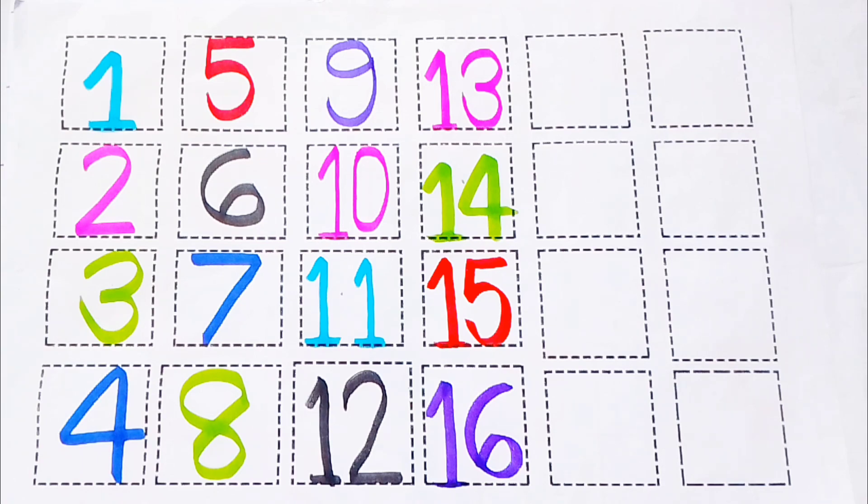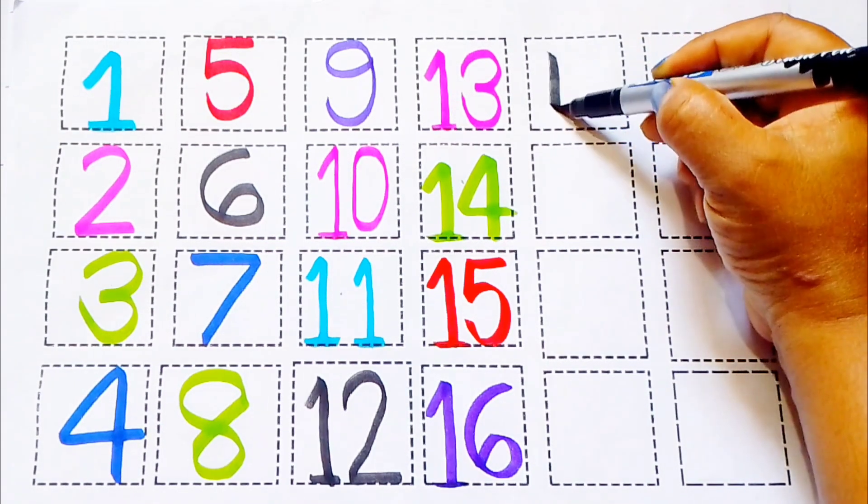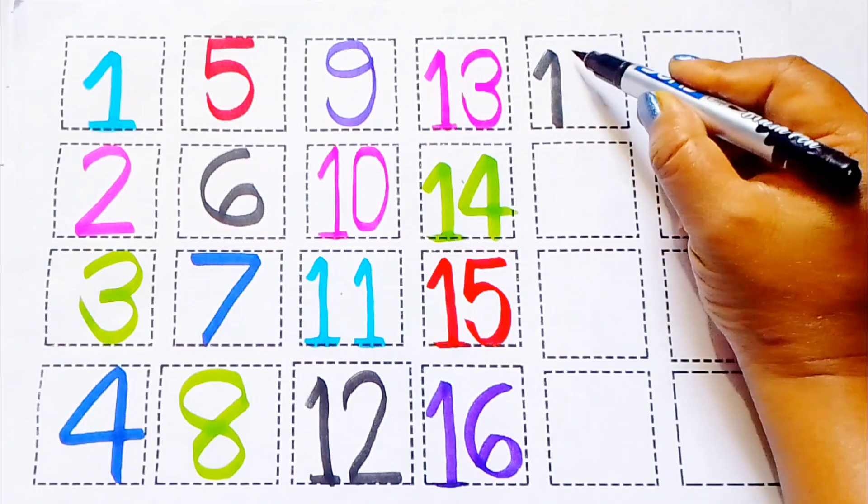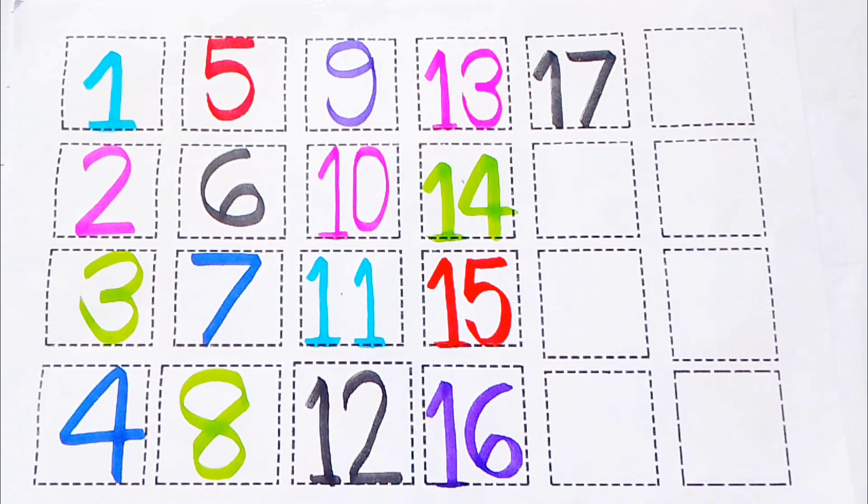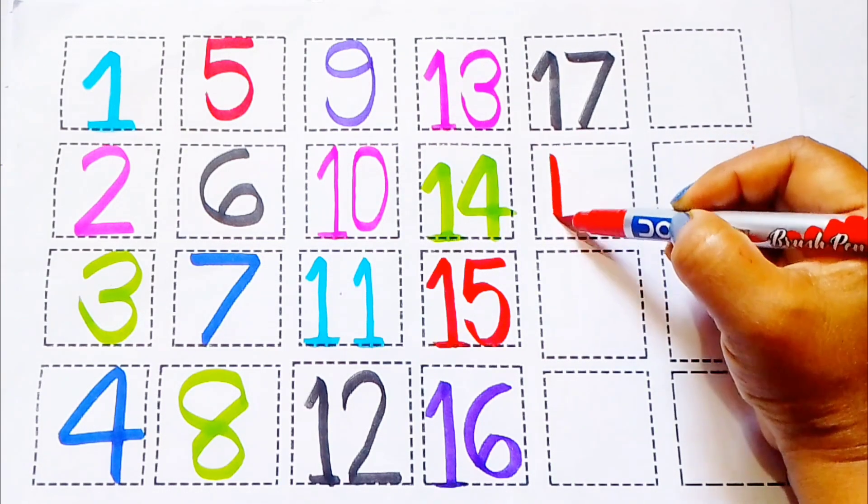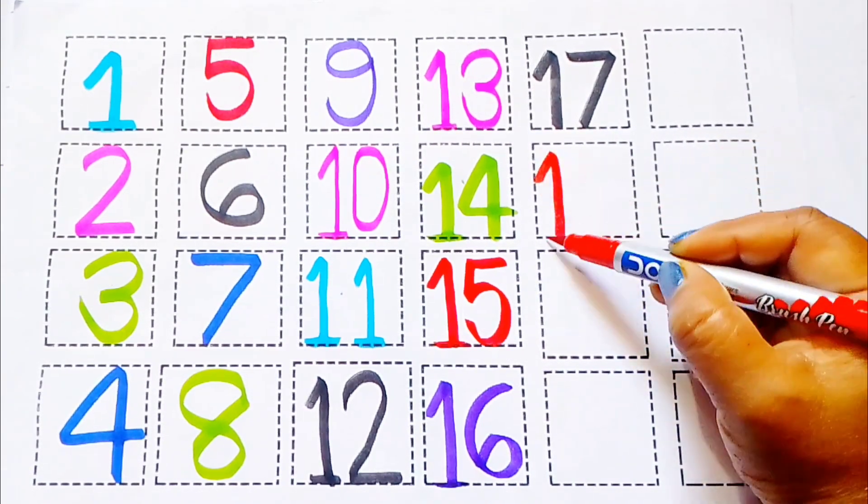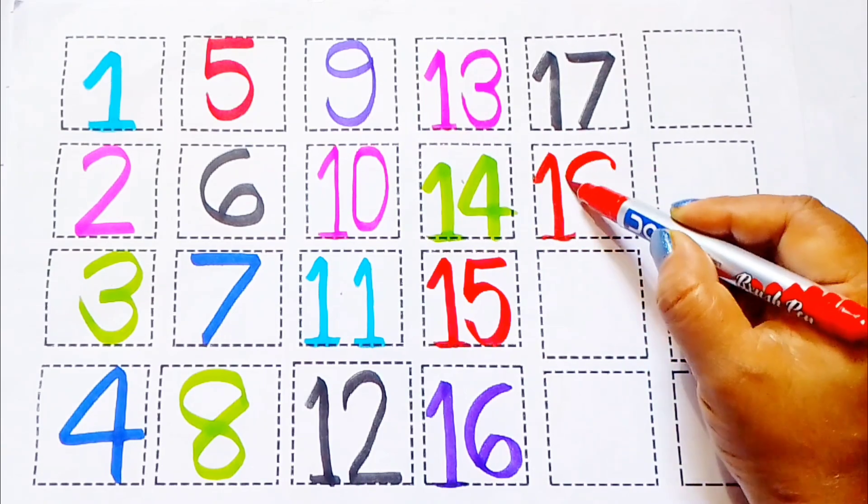Seventeen. Black color. S, E, V, E, N, T, E, N, seventeen. Eighteen. Red color. E, I, G, H, T, E, N, eighteen.